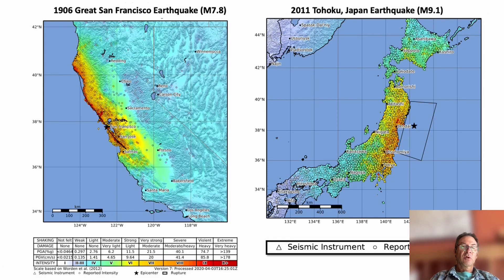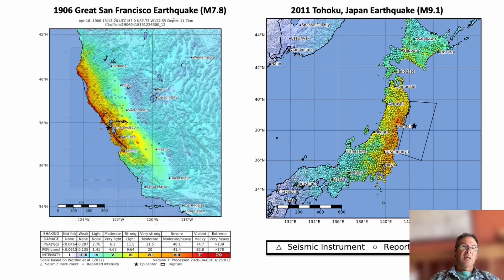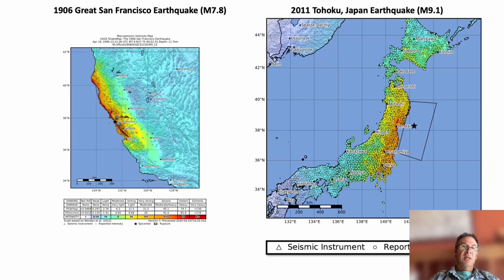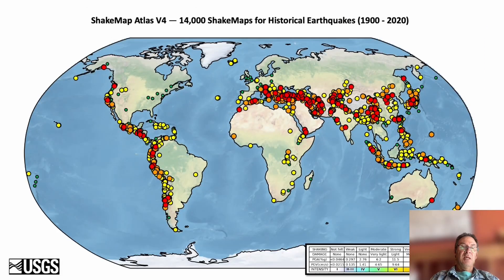The beauty of going back in time with these intensity measurements is that we can make very good ShakeMaps for past earthquakes as well as modern ones. These ShakeMaps can then be used to calibrate loss models, which ultimately can be used to calibrate risk models.